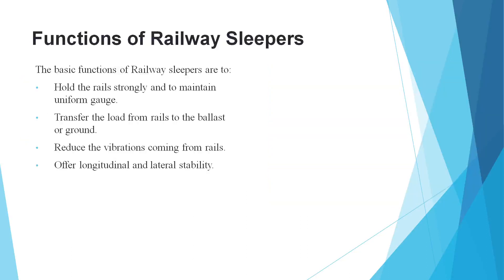Now we will know about the functions of railway sleepers. The first function is that it holds the rails strongly and maintains uniform gauge. It transfers the load from the rails to the ballast. It also reduces vibration coming from the rails and offers longitudinal and lateral stability.